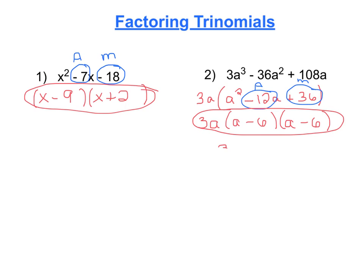If you prefer to write this as 3a and then a minus 6 with a square on the outside of the parentheses, you can do that as well because whenever you have two of the same term, you can always just write them once instead of twice and put a square on the outside.